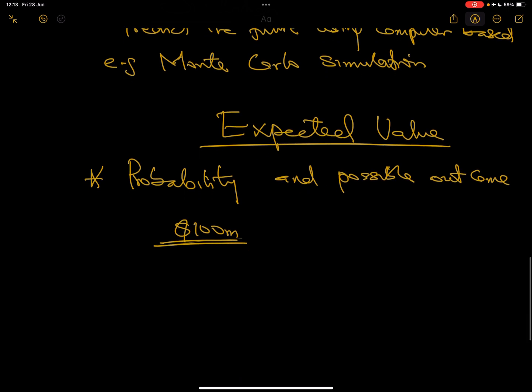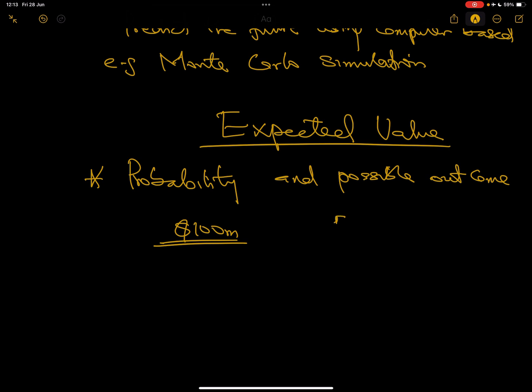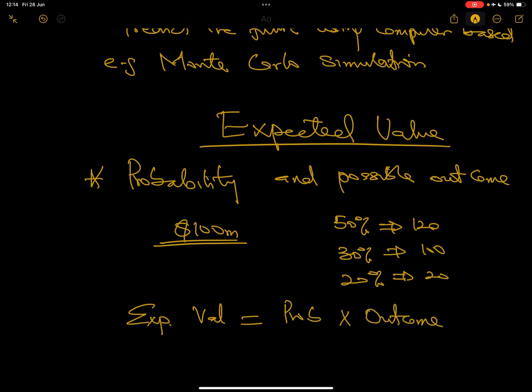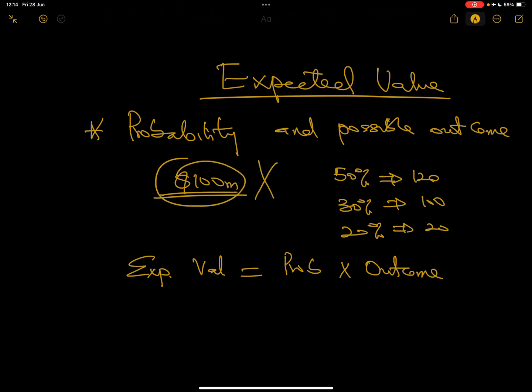This works with probability and the possible outcome. Take for instance, if you know that for you to be able to sell to make 100 million dollars is not 100% sure. However, you know that there is 50% chance of making 120 million, there is 30% chance of making 100 million, and there is 20% chance of making just 20 million. What this means is that you cannot just say because 50% chance is the highest then you will work with 120 million. Then you might be moving so far away from your actual.